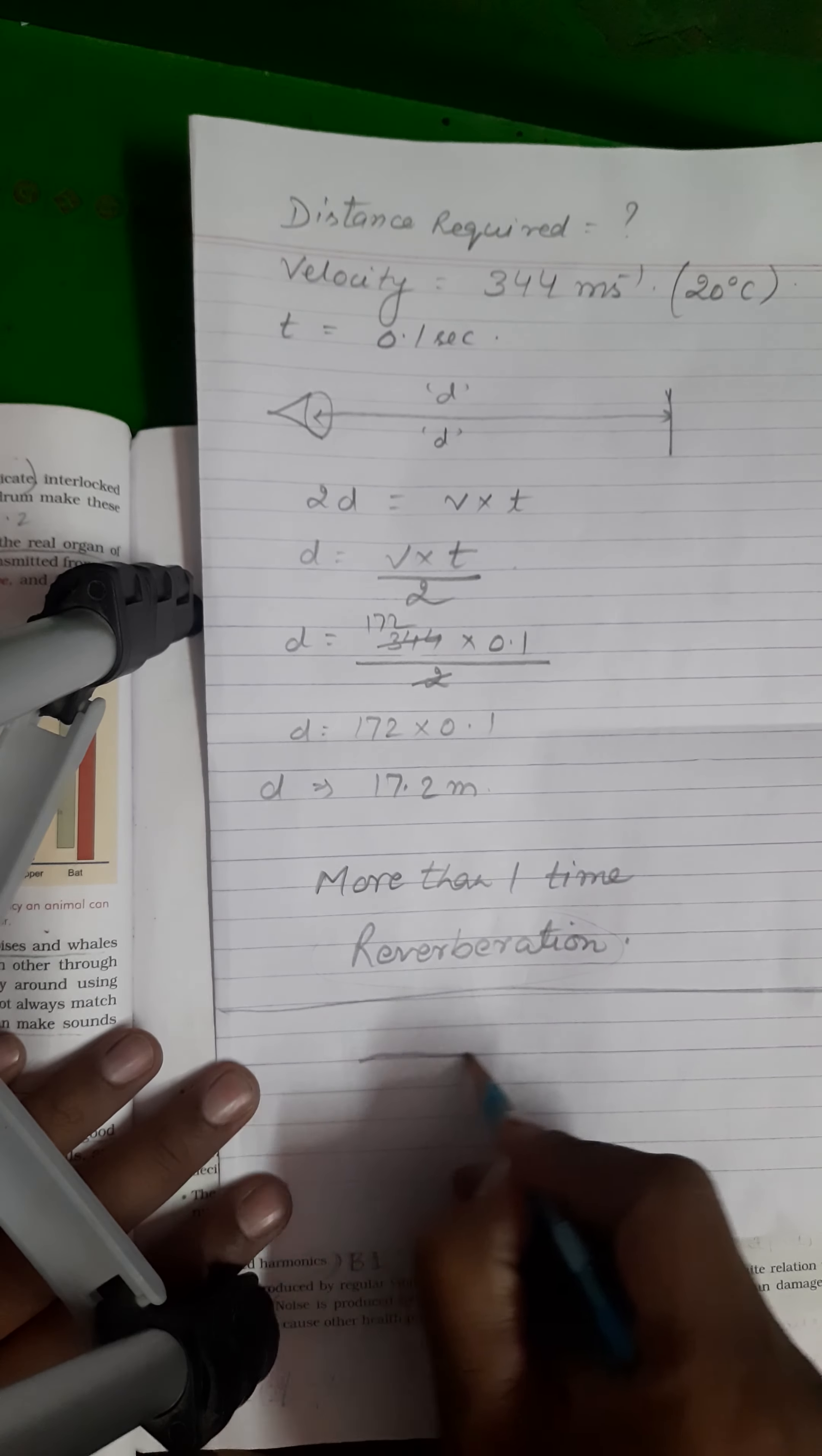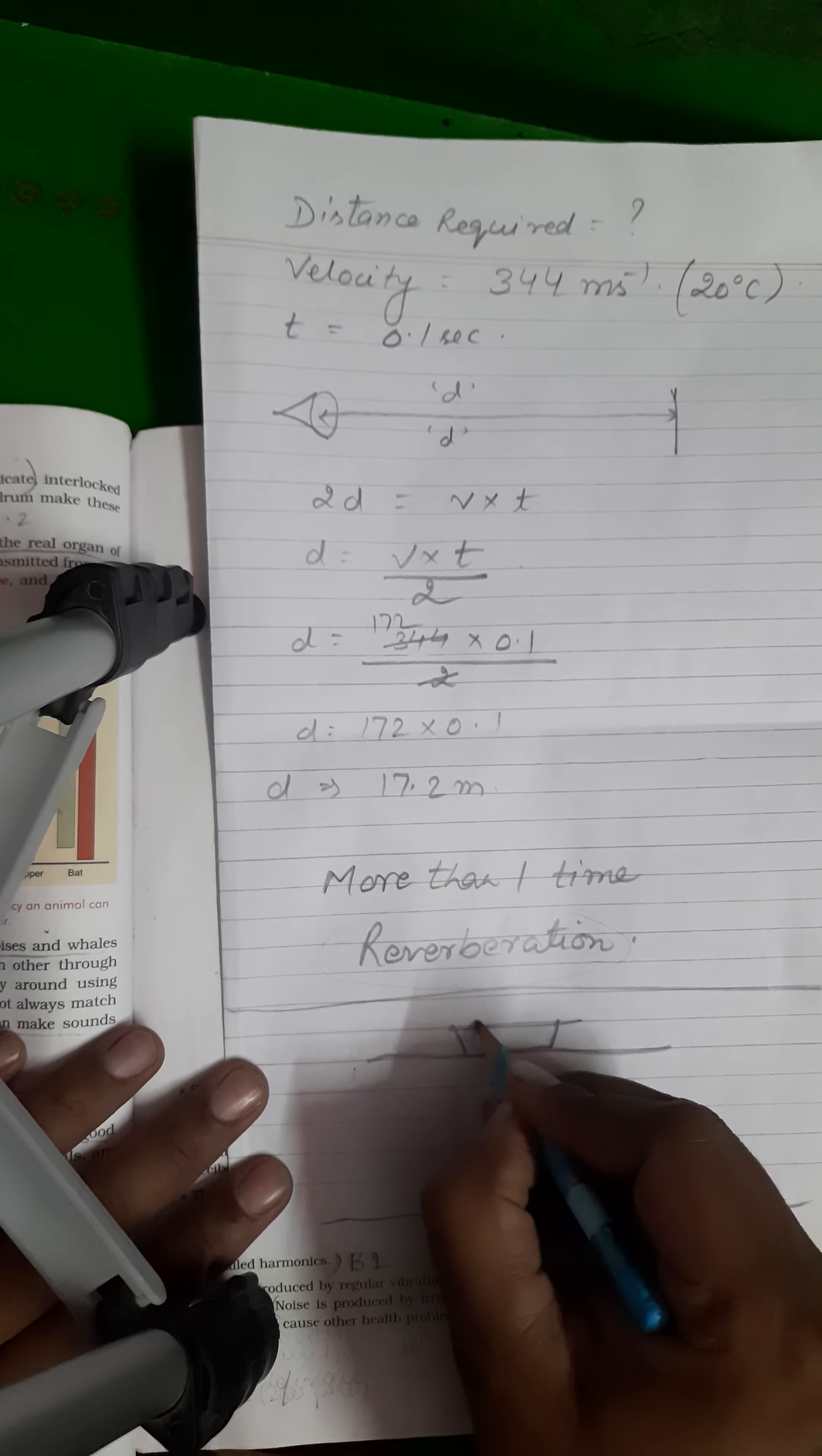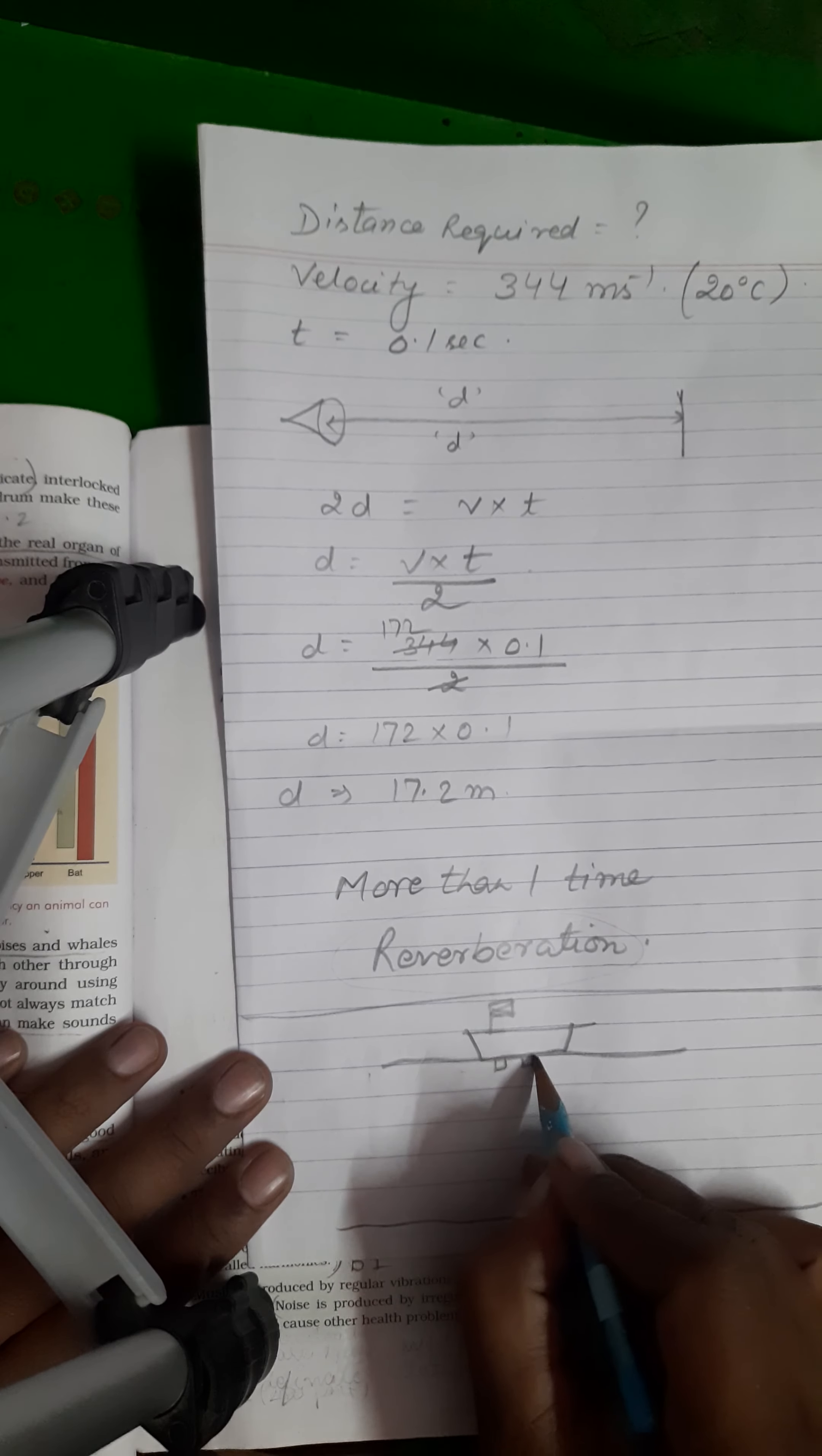Suppose this is the sea and this is the sea bed. Now here one ship is moving. This is the ship. Here we have two things. One is the sound producer and this is the detector of sound.